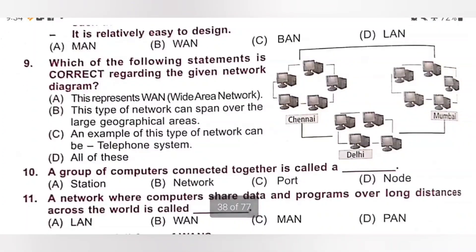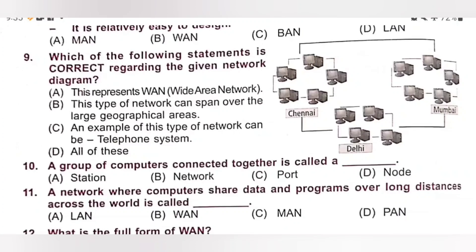Ninth one. Which of the following statements are correct regarding the given network diagram? A. This represents WAN, that is Wide Area Network — correct. B. This type of network can span over large geographical areas — correct. C. An example of this type of network can be the telephone system — correct. Since A, B, C are all correct, option D, All of these, is the correct answer.